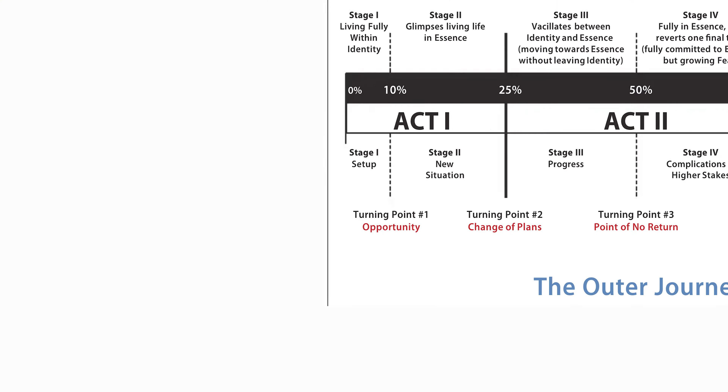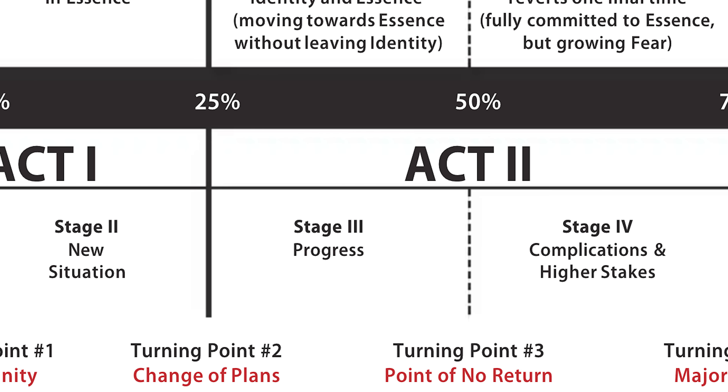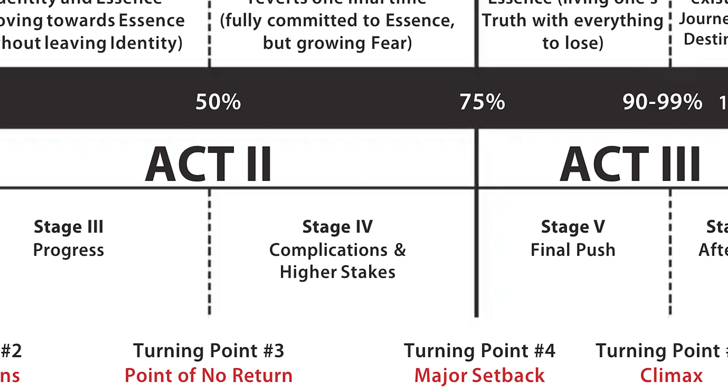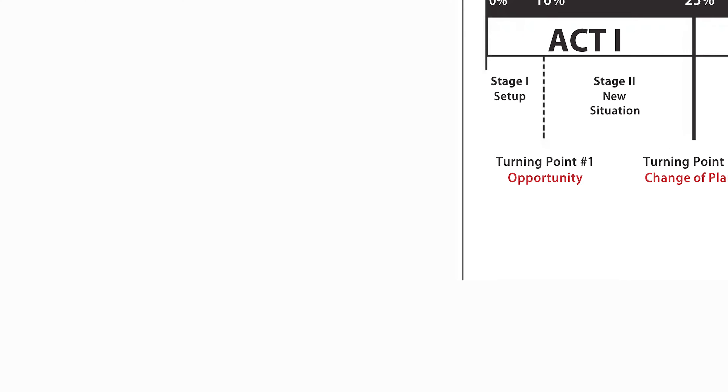There are six stages that your story is going to put your characters through: the setup, the new situation, progress, complications and higher stakes, the final push, and aftermath. These six stages are primarily created by five turning points. Throughout your film, you're going to have two journeys: the characters' in-journey and the characters' out-journey, and throughout the structure process we're going to be alternating between these two journeys.